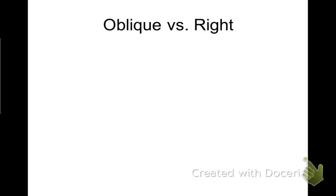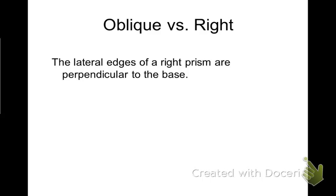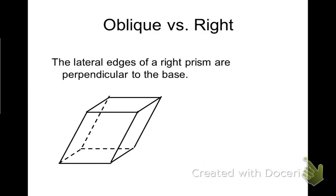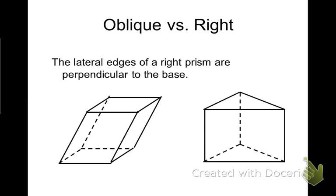We continue with the discussion of the difference between an oblique prism and a right prism. The lateral edges of a right prism are perpendicular to the base. The prism on the left is oblique, and you can see that the lateral edges are not perpendicular to the base in an oblique prism.